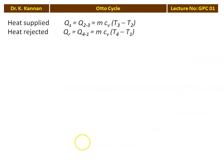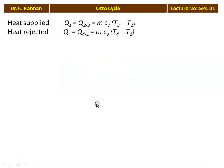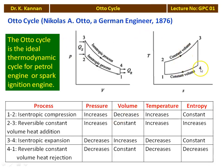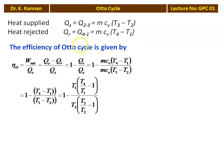The heat supplied during process 2 to 3: Qs = m × Cv × (T3 − T2). The heat rejected during process 4 to 1: QR = m × Cv × (T4 − T1). The efficiency of the thermodynamic Otto cycle equals net work divided by heat supplied: η = W_net / Qs = (Qs − QR) / Qs = 1 − QR/Qs = 1 − [m Cv (T4 − T1)] / [m Cv (T3 − T2)].